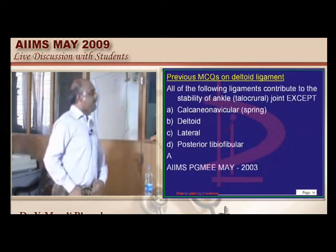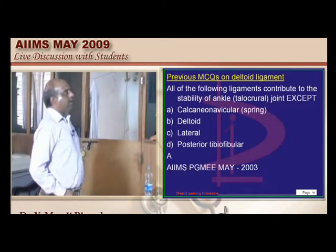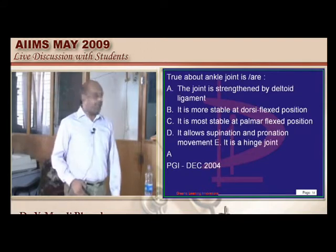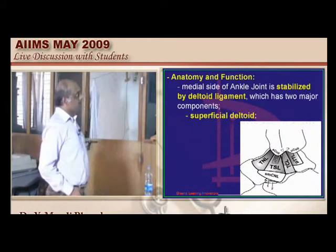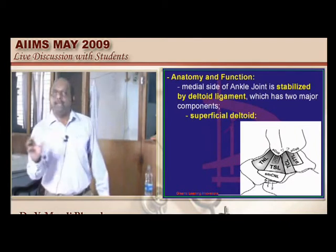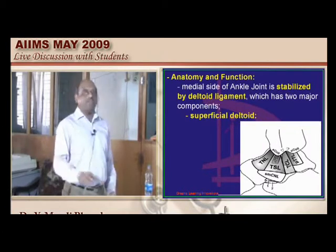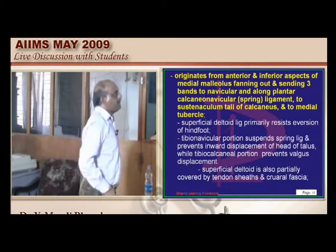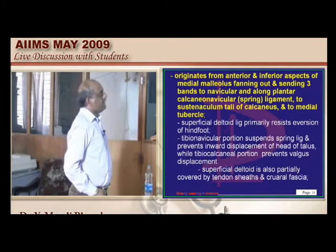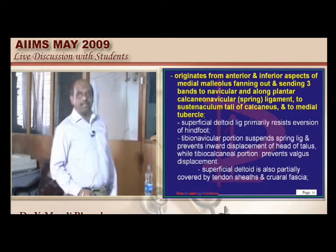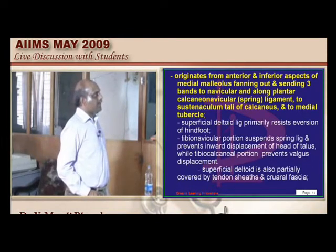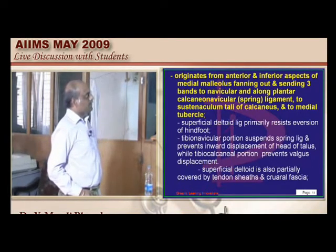The deltoid ligament was a favorite AIMS May 2003 question — it provides stability to the ankle. In which position does it provide stability was also asked in PGI 2004. There is one superficial deltoid ligament and one deep deltoid ligament. It originates from the anterior and inferior aspect of the medial malleolus and inserts on the calcaneus and talus. It has a relationship with the medial malleolus, sustentaculum tali, and the spring ligament, but nothing to do with the cuneiform.